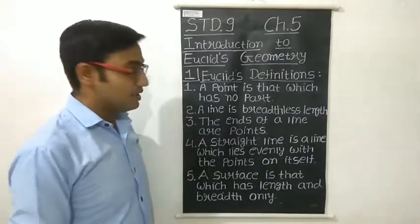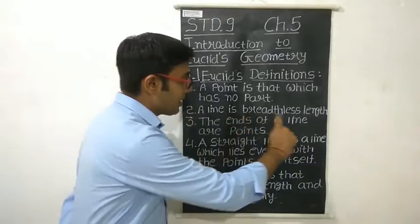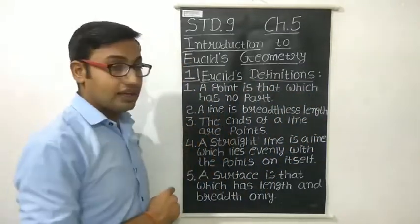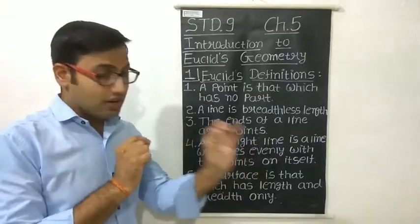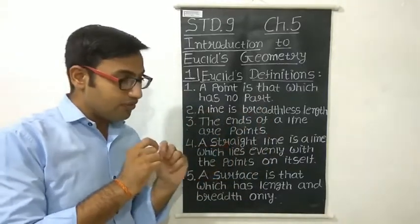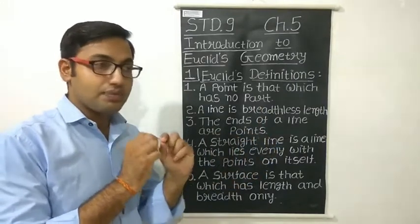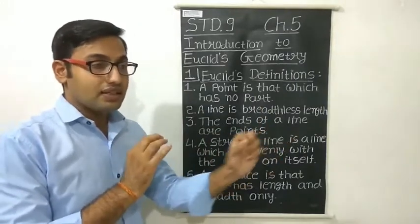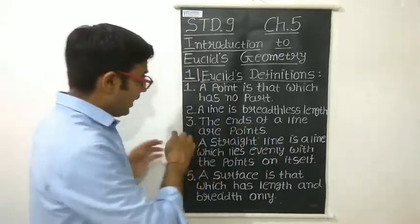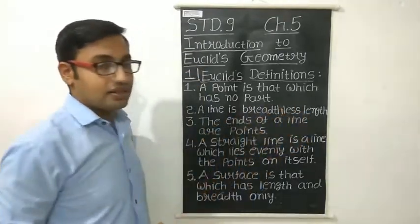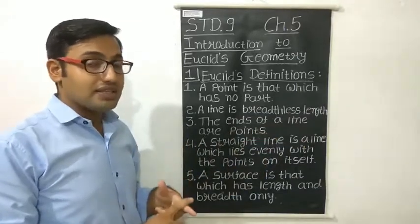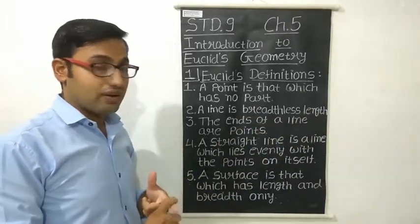The second definition: a line is breathless length. A line, or straight line, is a collection of points in a straight line. It has only one dimension — we can call it length — and it has no breadth. So a line is a breathless length, and we can say it is a one-dimension figure.